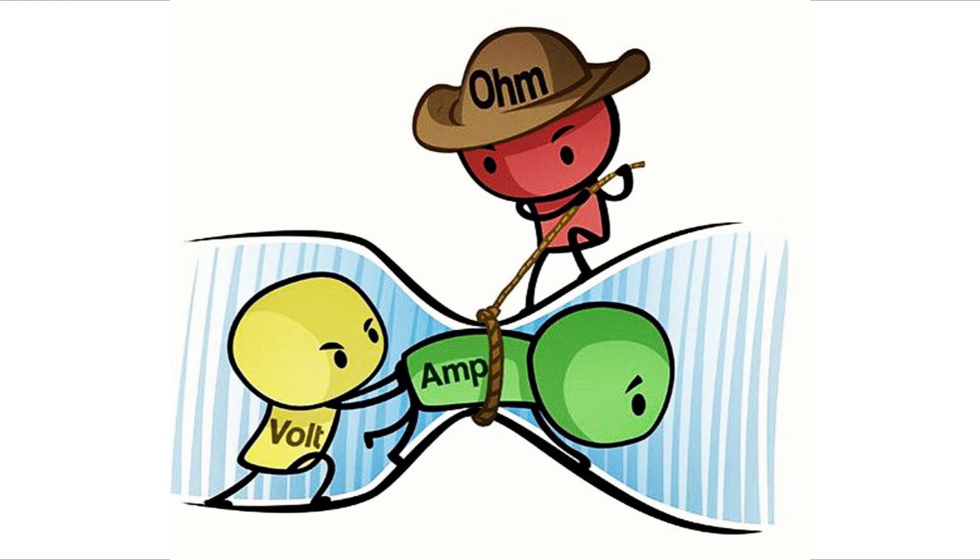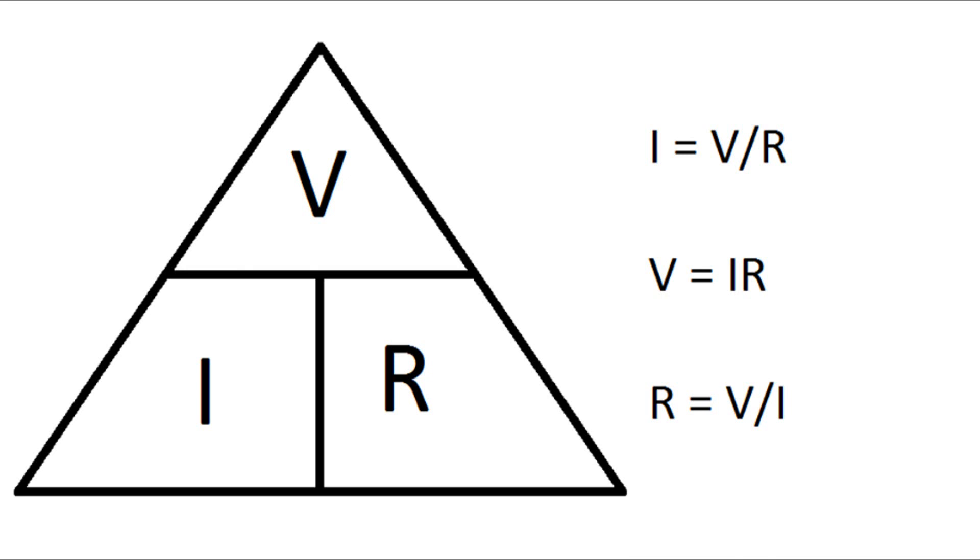Easiest way to look at it is amps is the electricity itself, voltage is what's pushing it down the line, and ohms is the resistance that's trying to slow it down. So these are the basic formulas: current equals voltage divided by resistance, voltage equals current times resistance, and resistance equals voltage over the current.